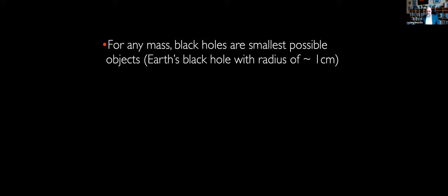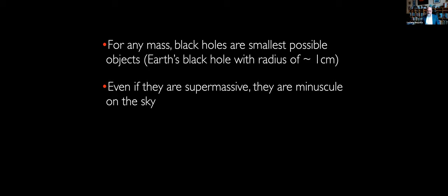So first of all, you have to remind that black holes for any mass, black holes are the smallest objects you can produce. So you can take the Earth and convert it into a black hole if you can squeeze it into a sphere of a radius of about one centimeter. So if you can do this hypothetically in some way or form, then you have produced a black hole out of our planet. Now, even if they are supermassive, they are very large masses, they are still minuscule when they are on the sky. And that means that if you want to take a photo of them, you need to have the highest possible resolution.